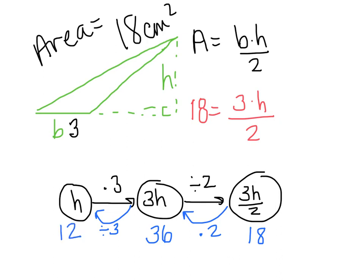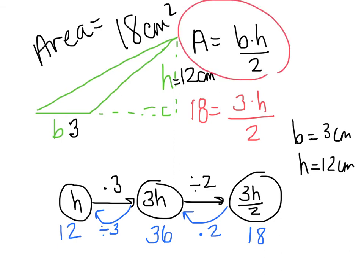So for this triangle, my height is no longer just a variable of h, but my height would actually be equal to 12 cm here. So h equals 12 cm. Base equals 3 cm. And you can always check your work by plugging into the formula that we started with at the beginning of the problem.